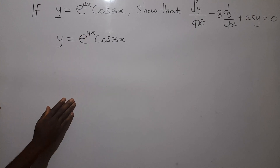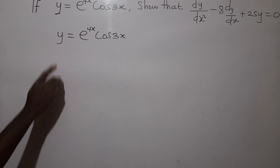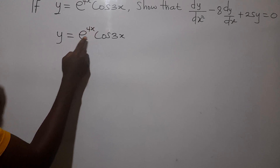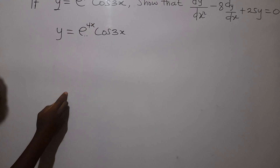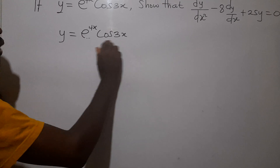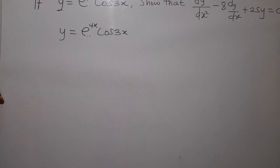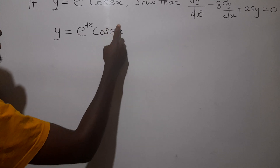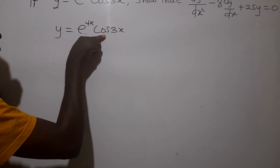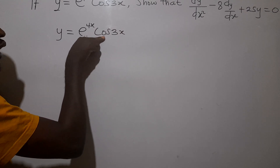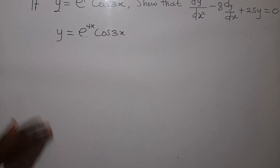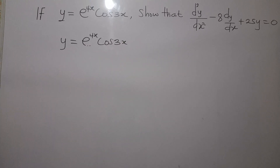How do we differentiate exponential functions? To differentiate exponential functions, we differentiate the exponent and use it to multiply the function. And how do we differentiate trigonometric functions of this nature? We first differentiate the angle and use it to multiply the differential of the trig identity — cos becomes negative sin — then we repeat the angle. So that is the idea we are going to use.